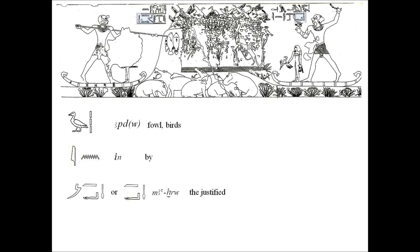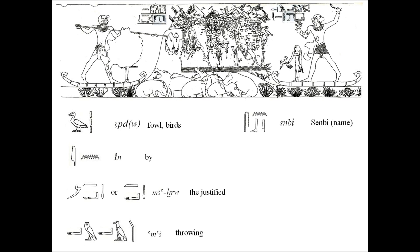Emea means throwing. Senbi is the name of the official whose inscription is depicted here. Ar, which is the mouth sign, also indicates the preposition at or towards. The fish section shows a determinative for fish with three plural stroke signs, transliterated as rammu. Much of the word is missing to indicate plural, such as the quail, so we indicate the oo within brackets to show that it is omitted but is part of the word.